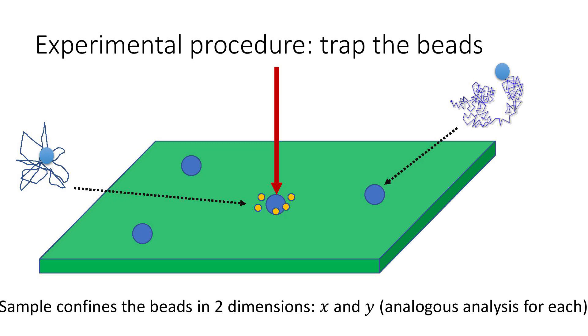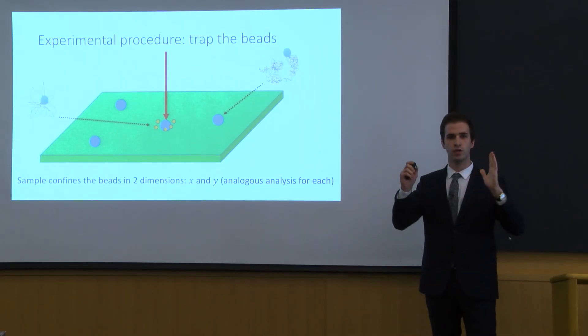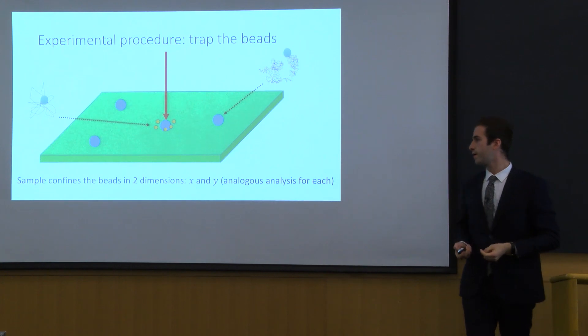As you can see, this lonely bead has its Brownian motion. What's interesting is when we shine light on top of a bead, we trap this bead and we can confine the Brownian motion so it's feasible to measure the motion.